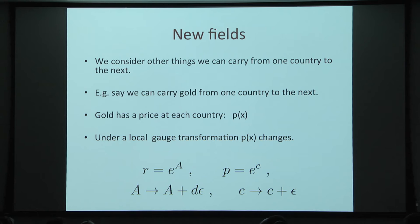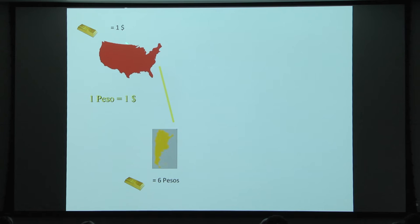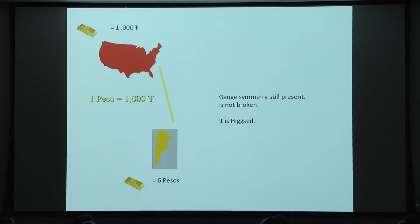Here there are no i's, so the gauge group is R — things just get rescaled under the gauge transformation. The transformations of exchange rates are the transformations of the ordinary gauge field, and the transformations of the log of prices is the transformation of a field which shifts — like the phase of some field. So now we have exchange rates, and in addition we have gold — speculators can carry gold or money as they see fit. The gauge symmetry is still present; it is not broken, it's just realized in this Higgs phase.